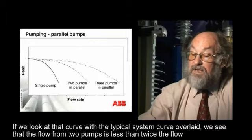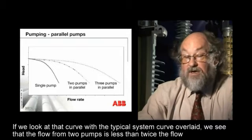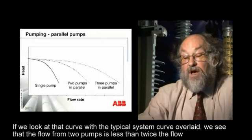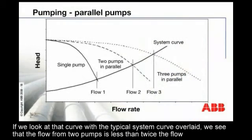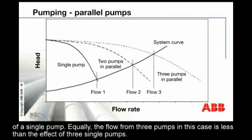If we look at that curve with a typical system curve overlaid, you can see that the flow from two pumps is less than twice the flow of a single pump. Equally, the flow from three pumps in this case is less than the effect of three single pumps.